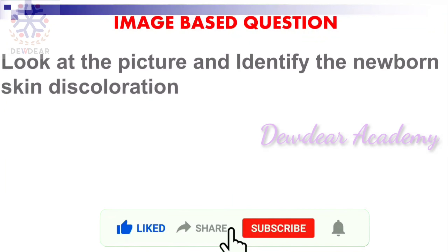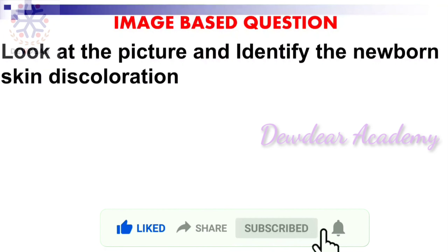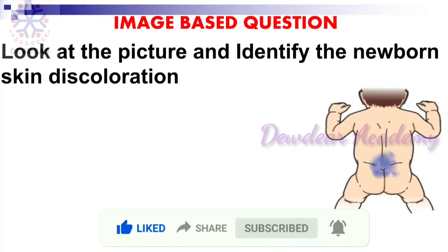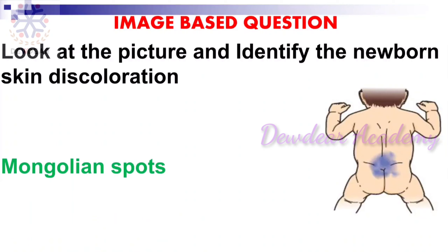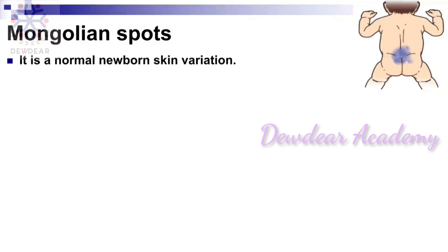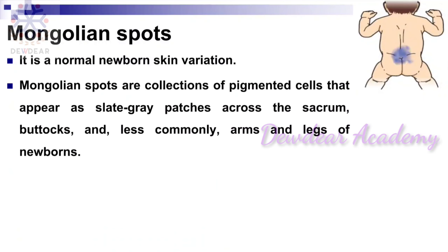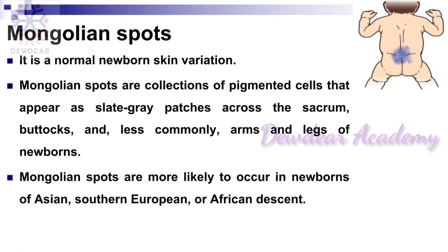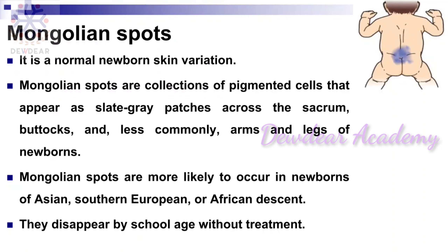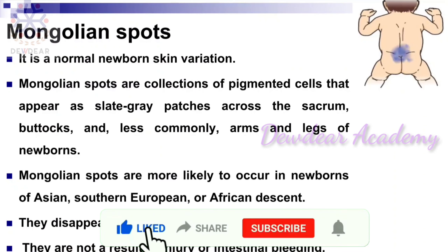Next question: look at the picture and identify the newborn skin discoloration. The answer is Mongolian spot. A Mongolian spot is a normal newborn skin variation — a collection of pigmented cells that appears as slate-gray patches across the sacrum, buttocks, and less commonly arms and legs of newborns. They are more likely to occur in newborns of Asian, South European, or African descent. They disappear by school age without treatment and are not a result of injury or intestinal bleeding.